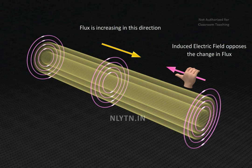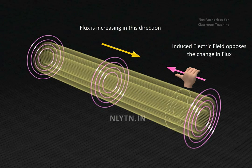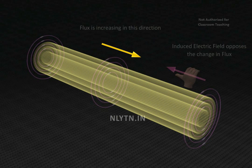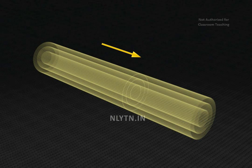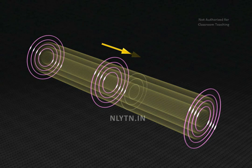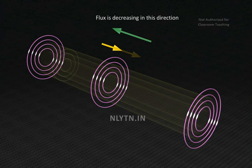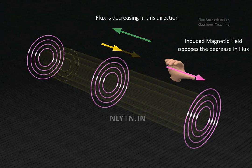So, for an increasing magnetic field in this direction, induced electric field will be as shown. And for a decreasing magnetic field, induced electric field will be as shown.